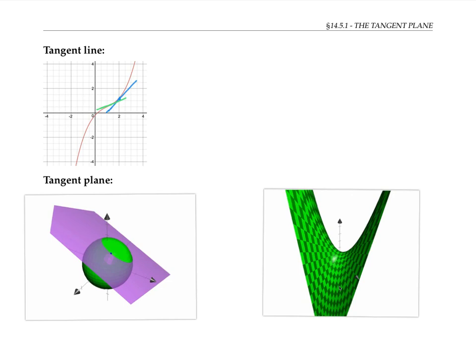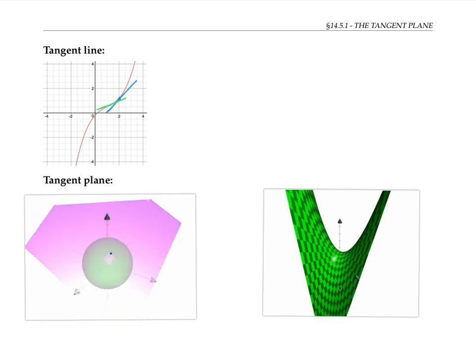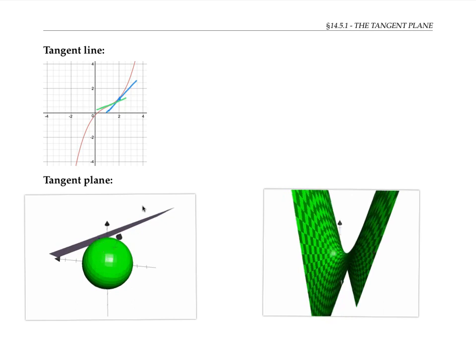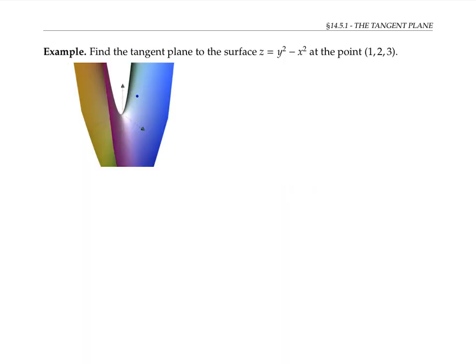In this animation, I'm starting with a plane that doesn't approximate the surface very well, but gradually modifying it to get a good approximating plane — the tangent plane. Like with tangent lines, tangent planes usually lie on one side of the surface or the other at the point, but sometimes the tangent plane cuts right through the surface. Let's find the tangent plane to the surface z equals y squared minus x squared at the point (1, 2, 3) shown here.